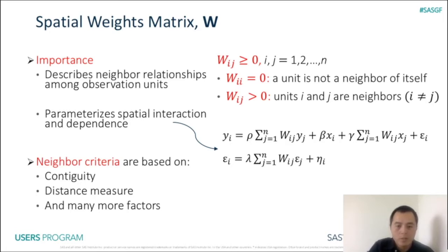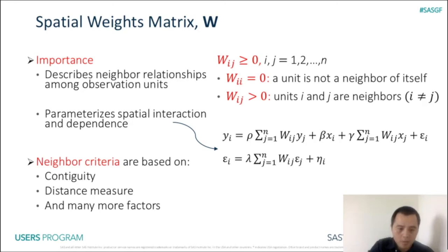As an example, let's look at a general modeling framework described by two equations. In the first equation, the first summation term accounts for spatial endogenous interaction, whereas the second summation term accounts for spatial exogenous interaction. Moreover, the second equation accounts for spatial interaction in the error term. To create a spatial weights matrix W, we can use neighbor criteria such as contiguity, distance, and many more.